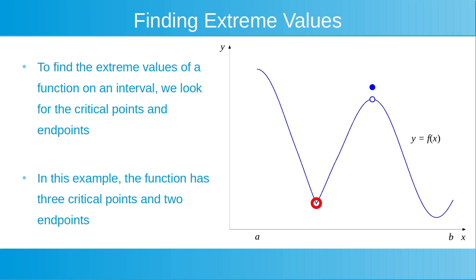At points like this, where the function curve has a corner, the derivative is undefined. On the open interval, currently highlighted with a red line, this critical point is a local minimum value.